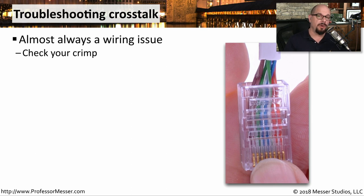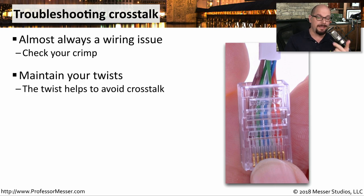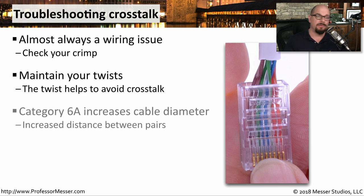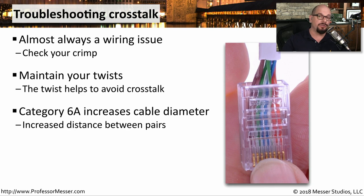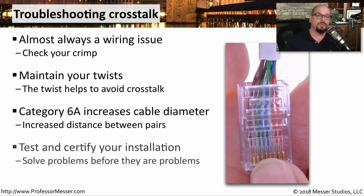One good place to start is the crimp that you added to the end of the cable. You want to make sure that you maintain the twists as they're going into the RJ45 connector, and if there are other connections along the way — patch panels, for example — you want to be sure you're maintaining the twists on those as well. You might also consider using a shielded cable with shielding between the different pairs, or a Category 6A cable, which increases the cable diameter and creates a larger distance between those pairs. This is why it's very common after installing a new cable infrastructure to perform an analysis of each connection, so you'll find any problems with crosstalk or other cabling issues before you plug in any other devices.